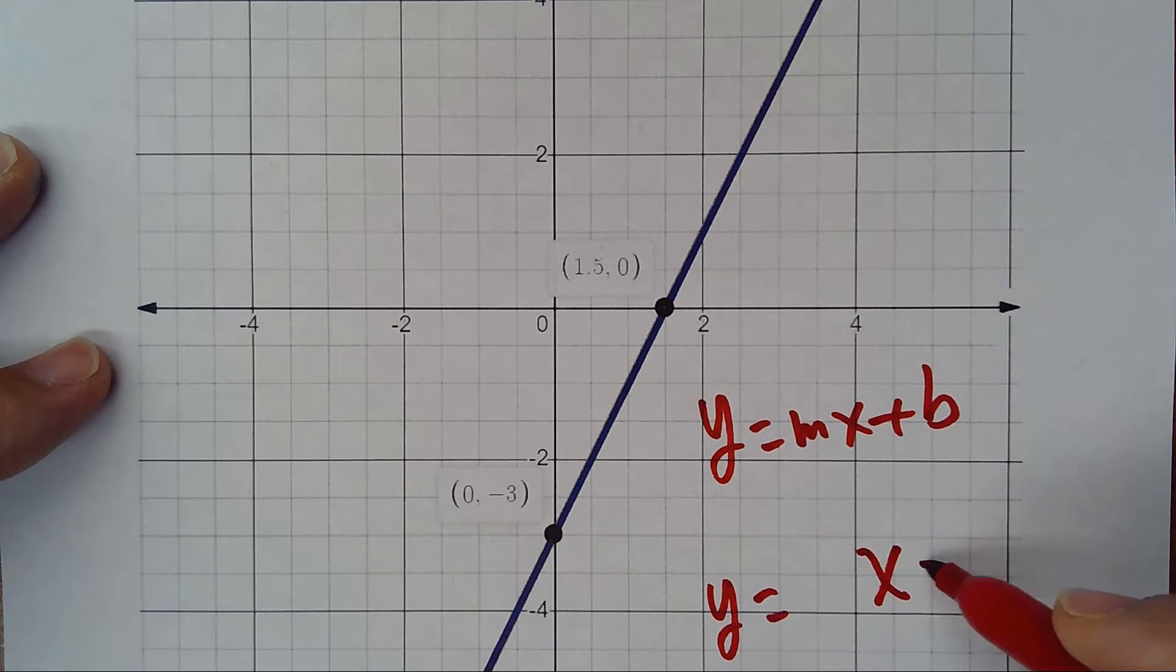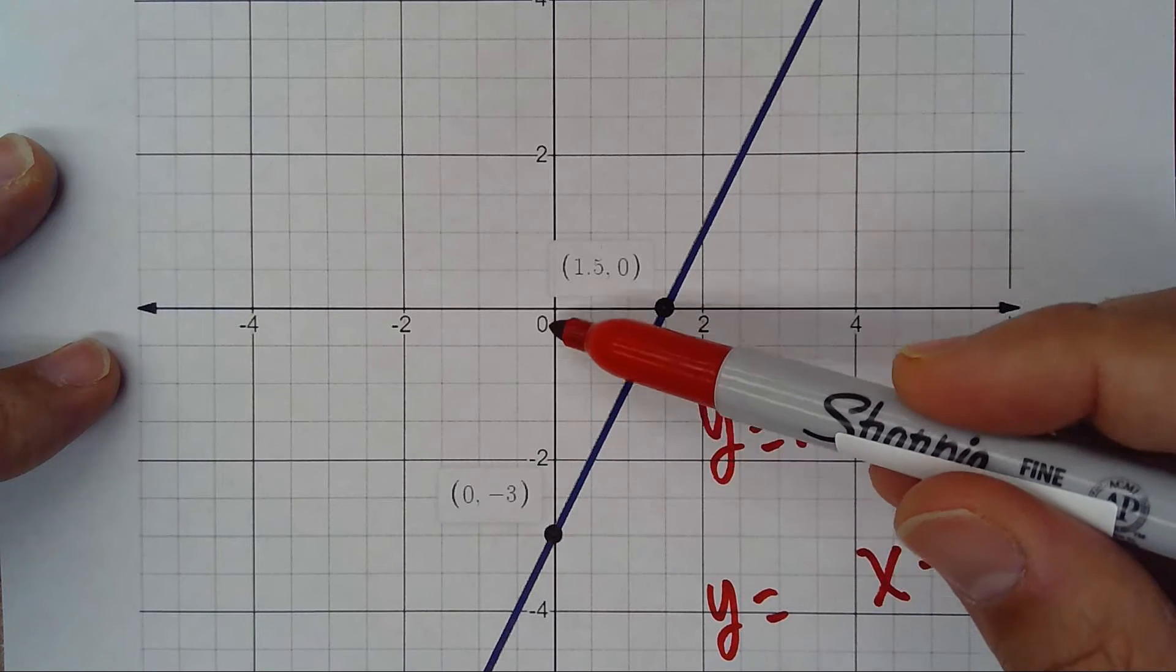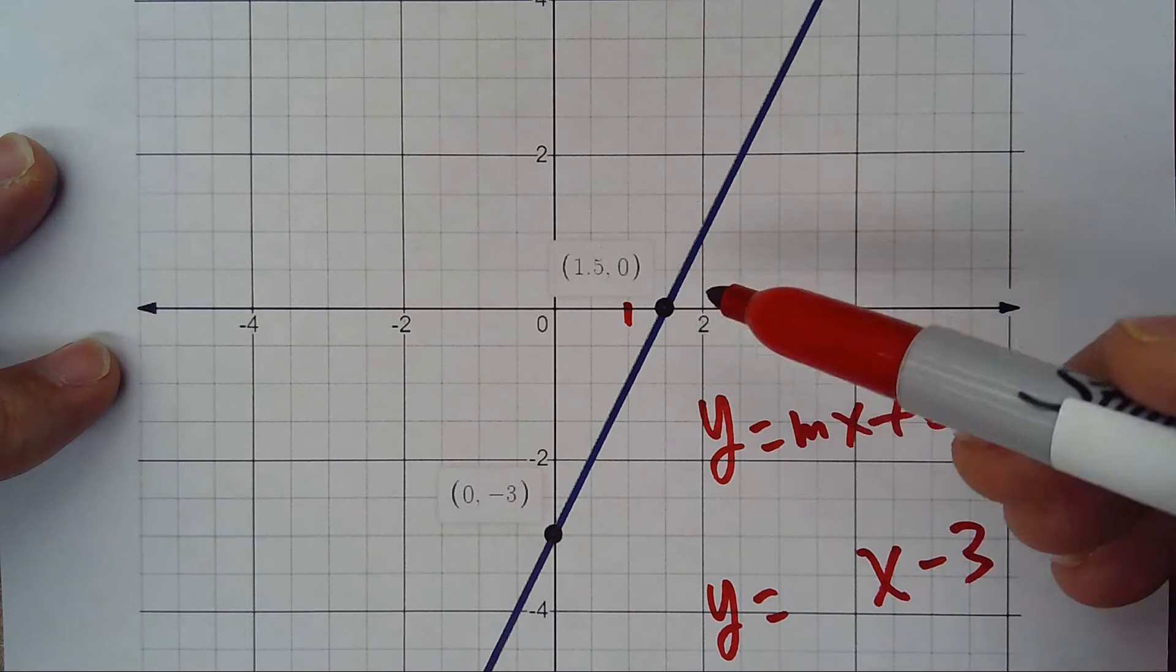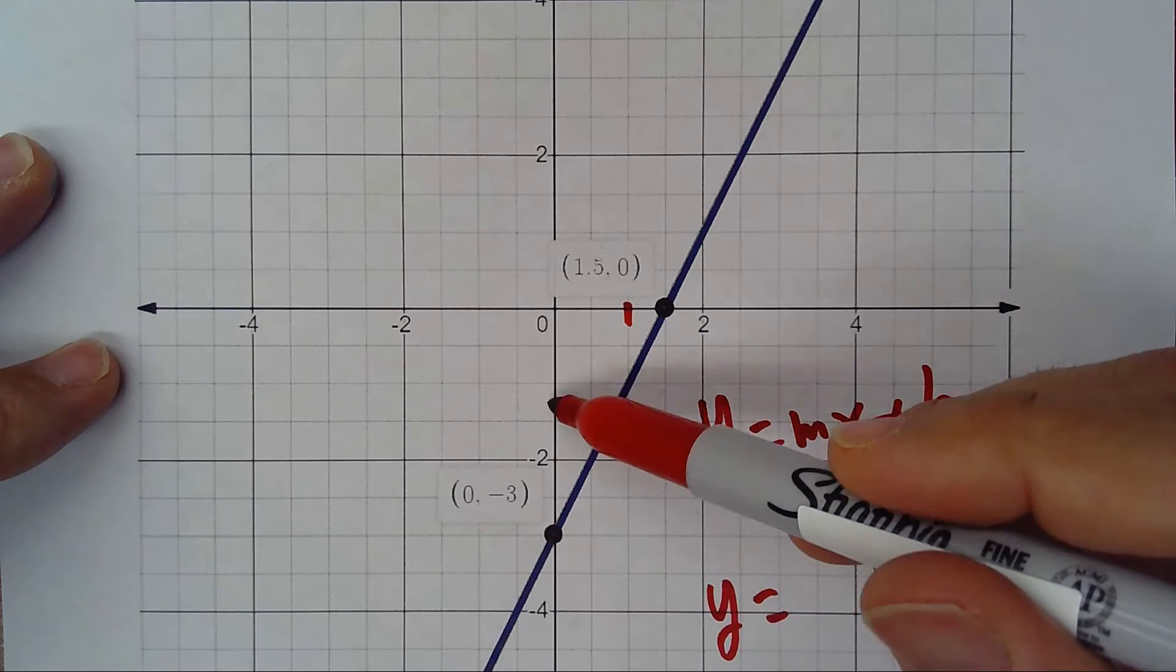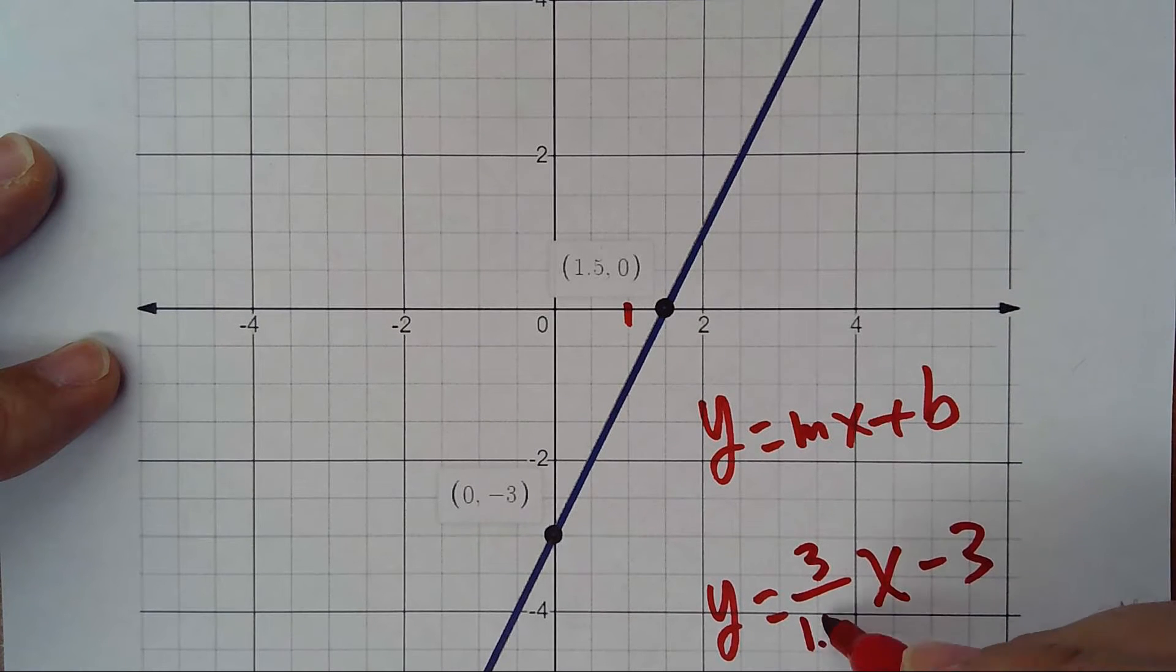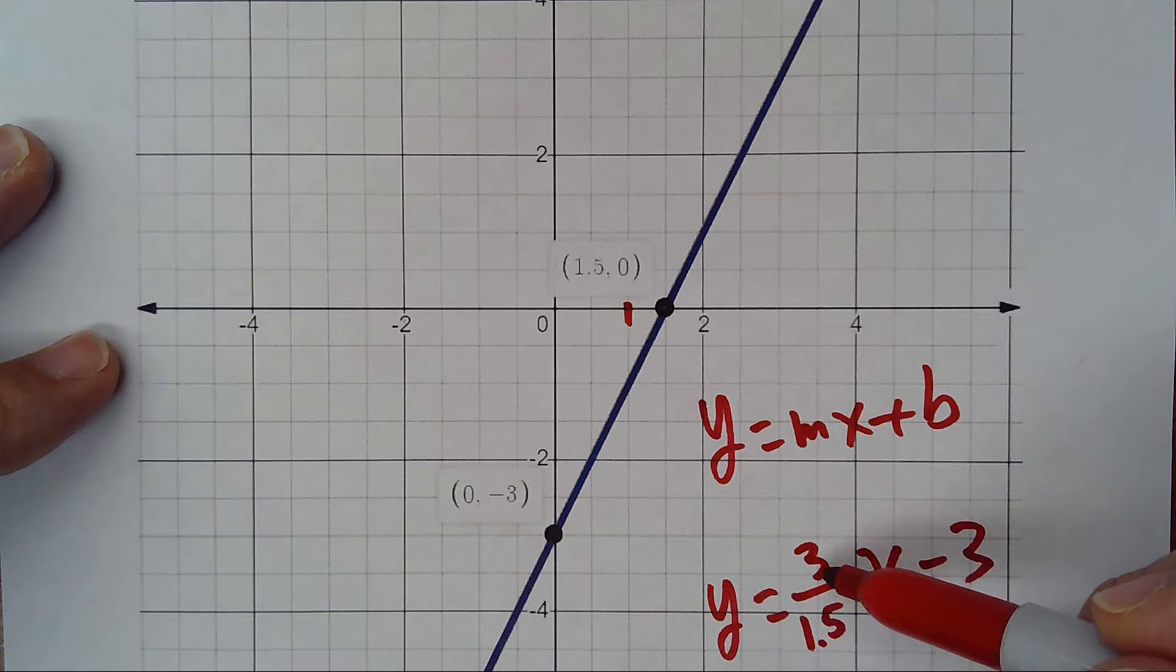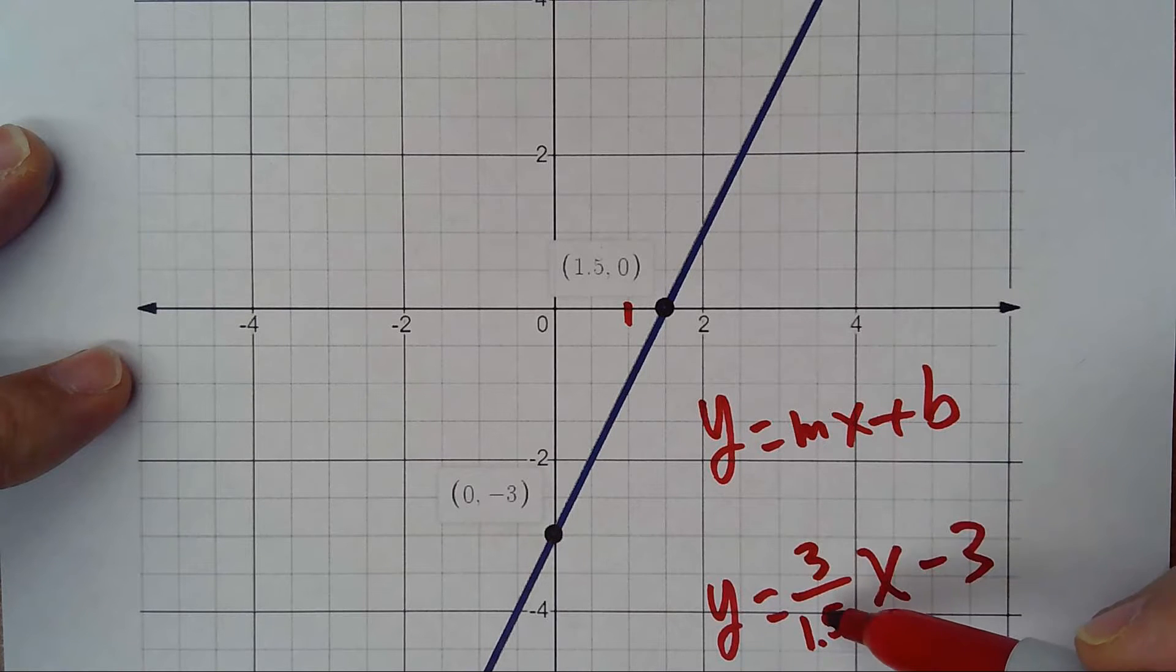This something is the slope. The slope goes 1, 2, 3 up and 1.5 to the right, so 3 up 1.5 to the right. If I double this it would be 6 over 3, or 3 divided by 1.5 is 2.